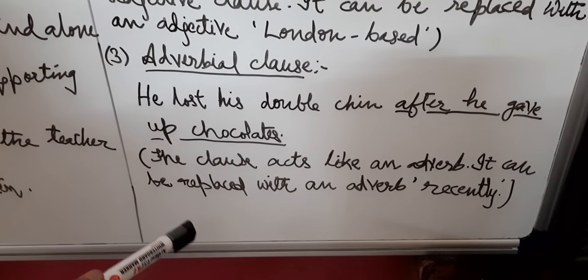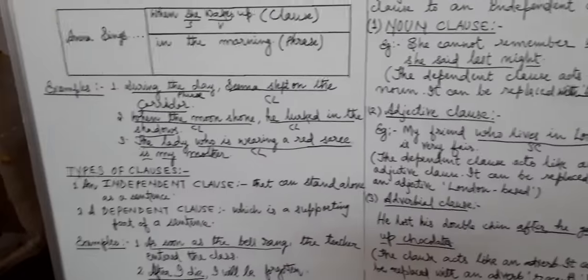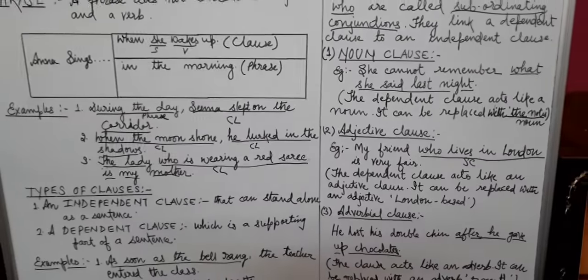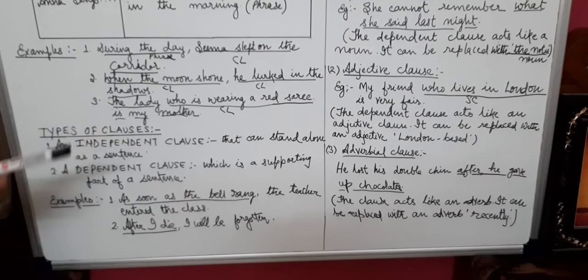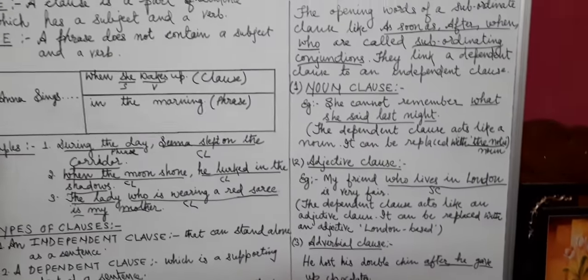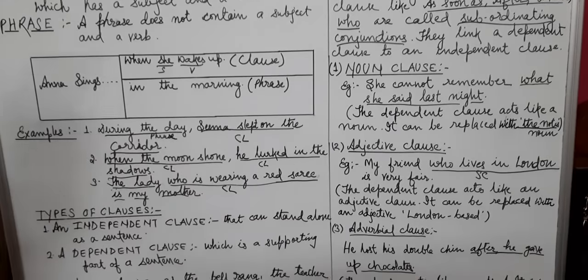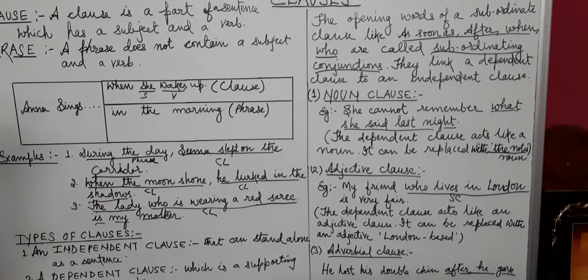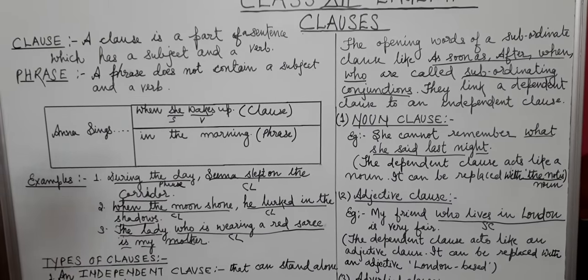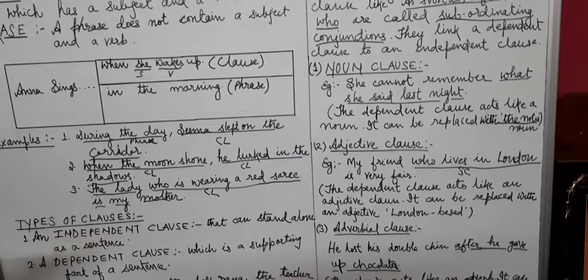So this is all about clauses for now, students. In the next class we will study about the types of adverbial clause — adverbial clause of time, of condition, of manner, of reason, of concession. The clause chapter is very important. It is tough but not that tough — if you study deeply and understand the concepts, it will be very easy. Thank you, students.